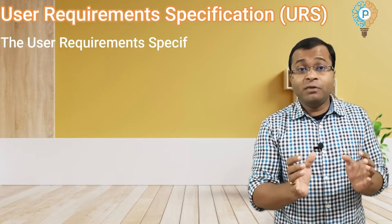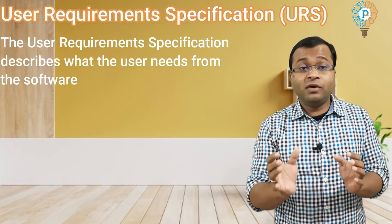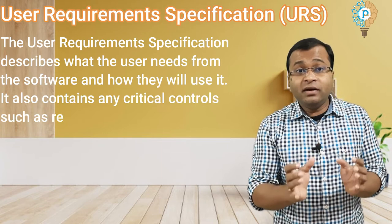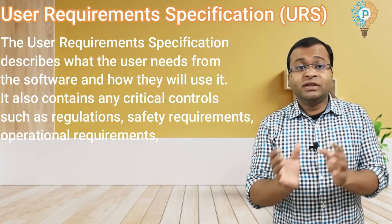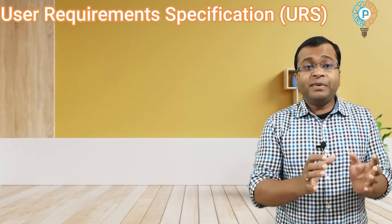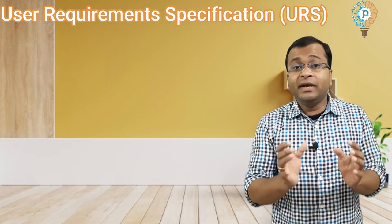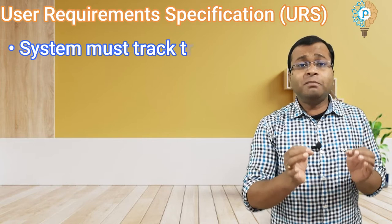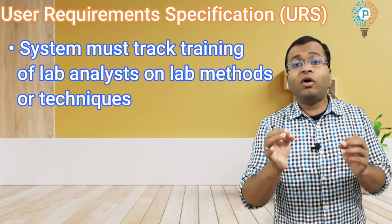The URS describes what the user needs from the software and how they will use it. It also contains any critical controls such as regulatory, safety, and operational requirements. For example, here is a list of a few user requirements that might be needed for a lab system, like: the system must track training on lab methods or techniques.